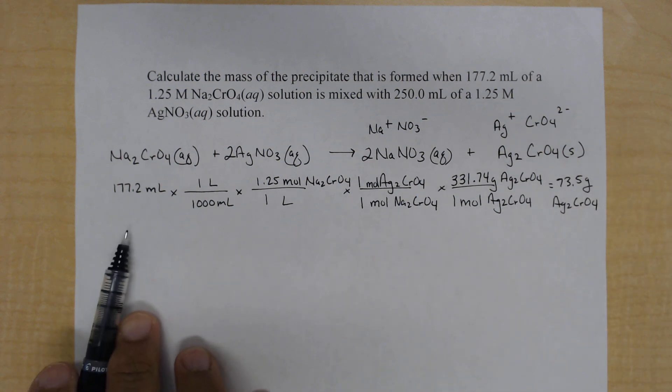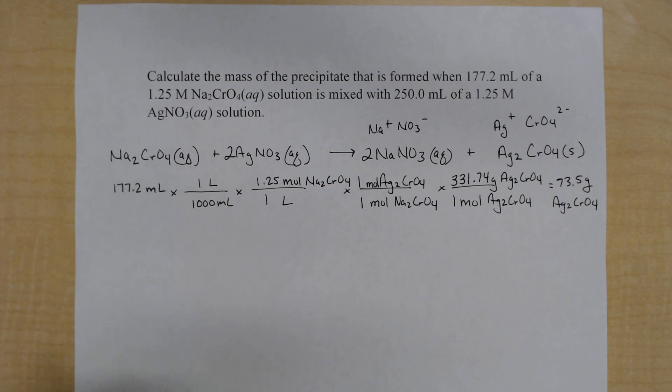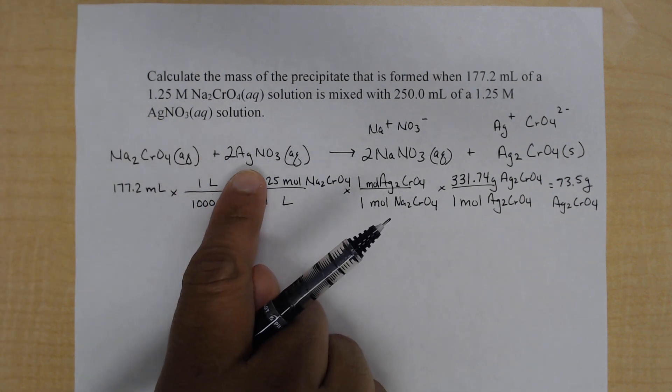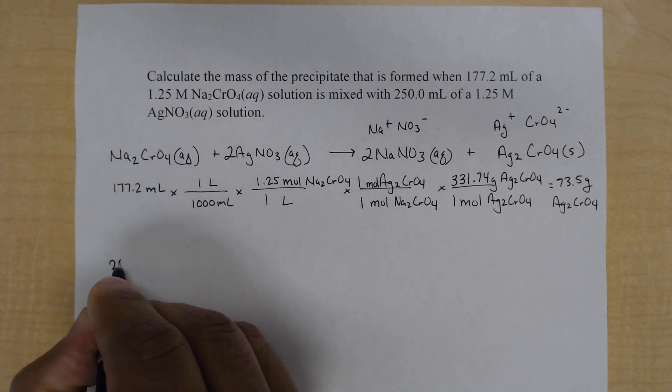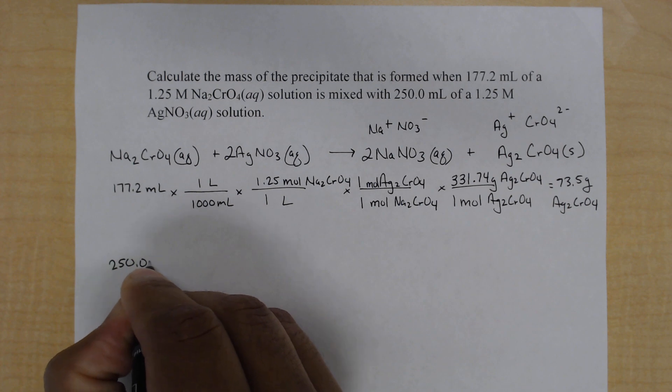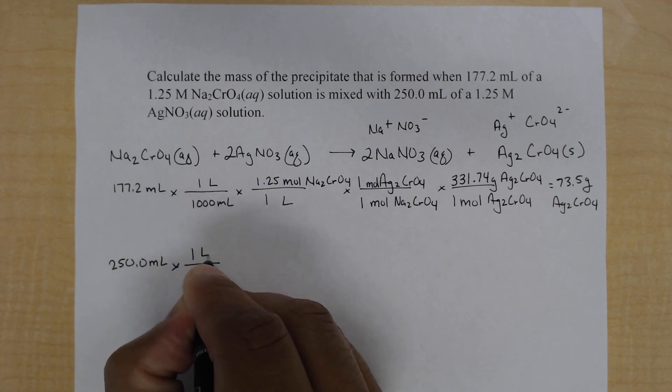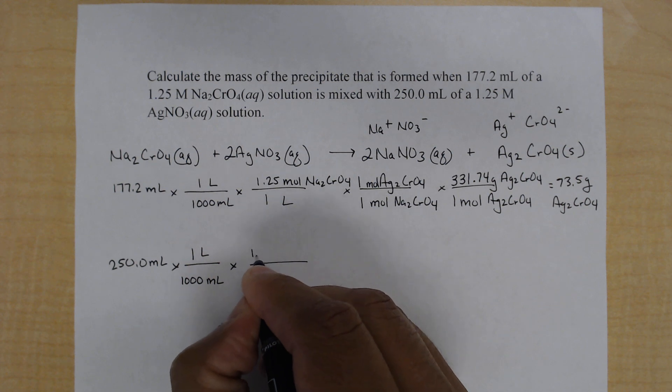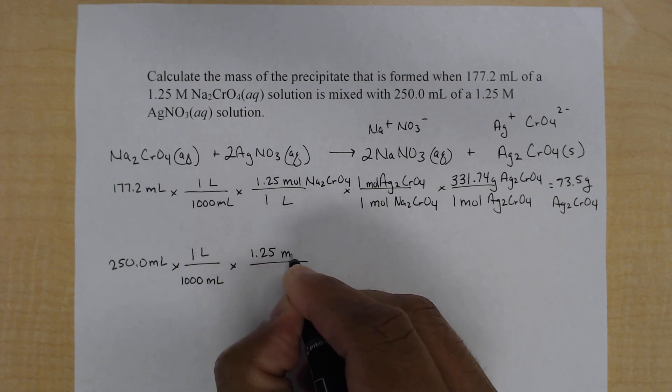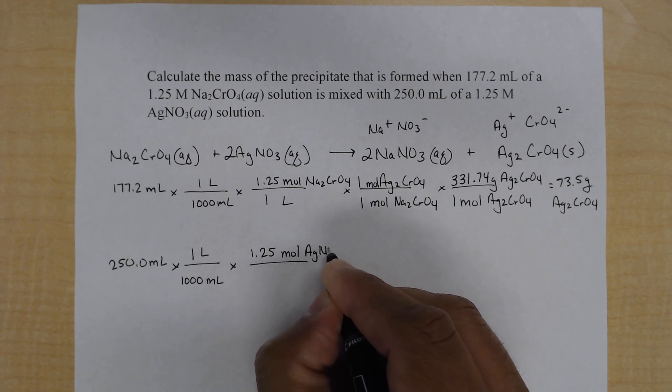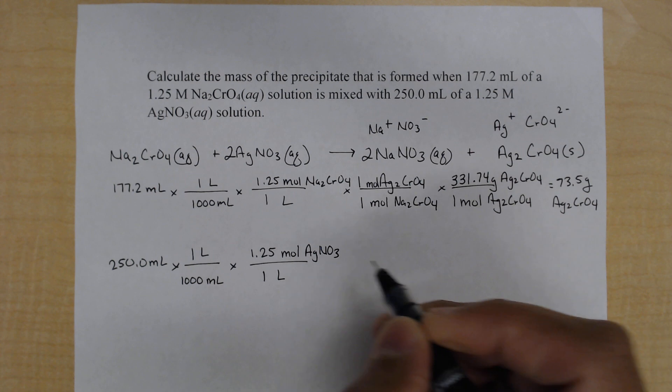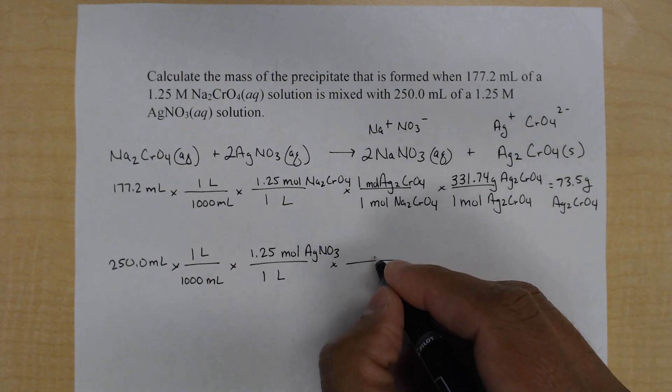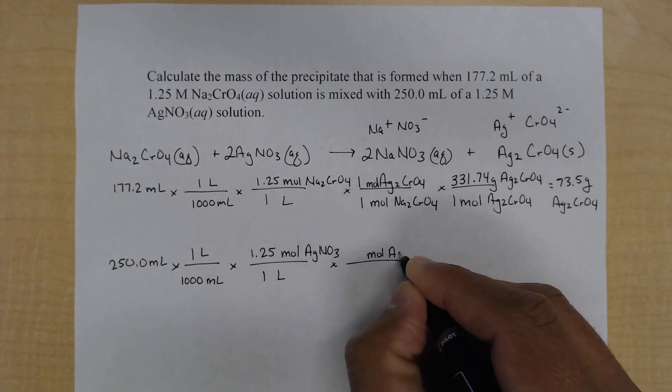So this is the amount that can be produced, assuming that our sodium chromate is the limiting reactant. Now, we don't know that. We have to test our silver nitrate. So let's do the same thing with our silver nitrate solution. For silver nitrate, we start with 250.0 milliliters. I'll convert to liters. Notice the molarity is exactly the same. So now that we've converted to moles, we can go convert to the product. And so we're interested in silver chromate.